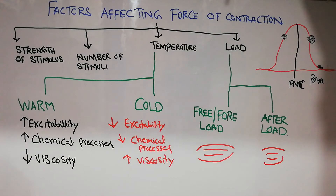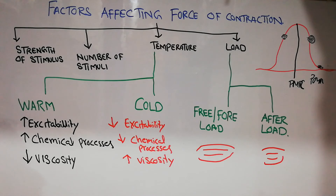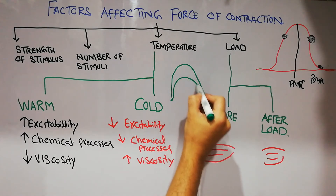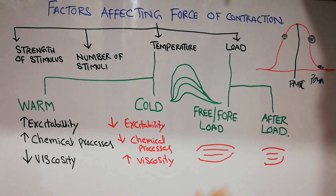In this type of load — free or fore load — the force of contraction of the muscle is increased. In the case of after load, if the load is gradually increased, a point will come when the muscle will no longer be able to lift the weight, similar to fatigue, where the muscle power decreases progressively. This phenomenon is more common in after load.